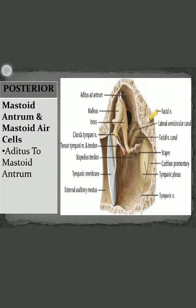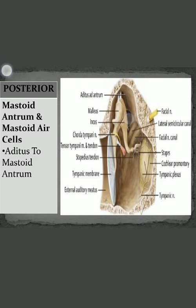Posteriorly, the middle ear cavity is connected to the mastoid antrum and mastoid air cells with the help of the aditus to the mastoid antrum. On the posterior wall you can see this opening — the aditus, which means an opening or an entrance that leads into a cavity. This aditus communicates the middle ear cavity with the mastoid antrum and the mastoid air cells.